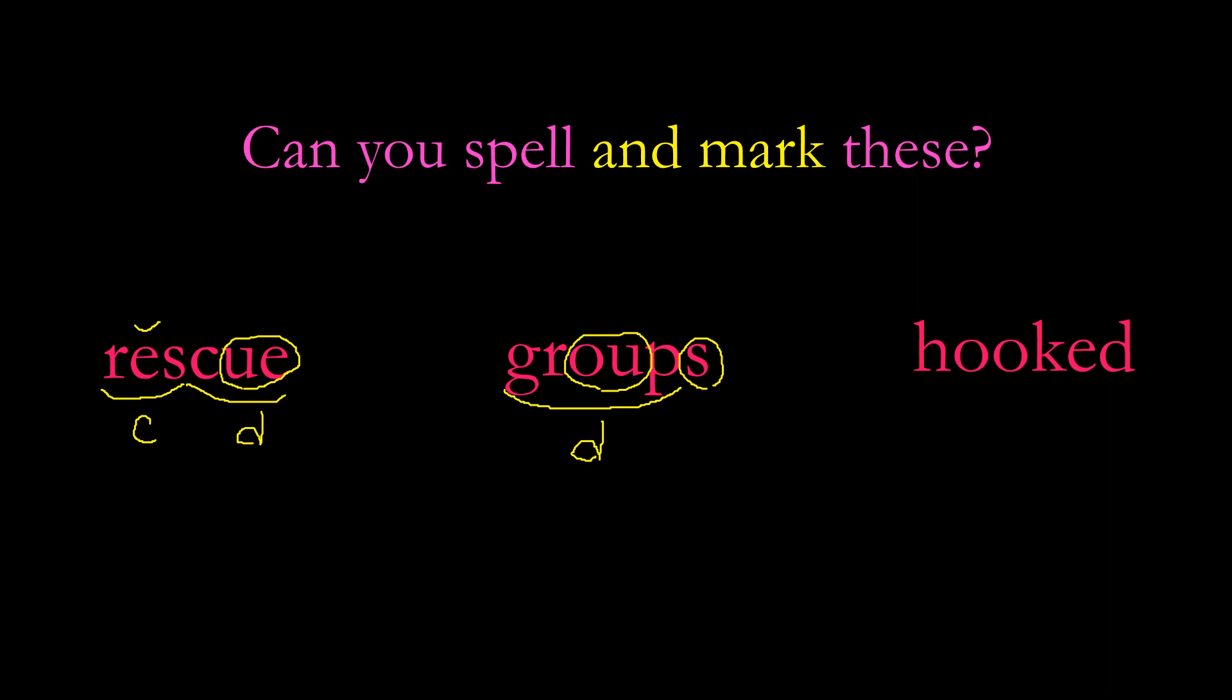The next word, and be careful with this one, is hooked. Many kids are hooked on Minecraft, for example. Now how are you going to mark it? Well, the first thing we need to do is figure out how many syllables it is, and it's just one. We've got a vowel digraph there, or a diphthong, so we're going to put a circle around that, and that makes it a d syllable. And then we have to put a circle around the ed because that's a suffix.